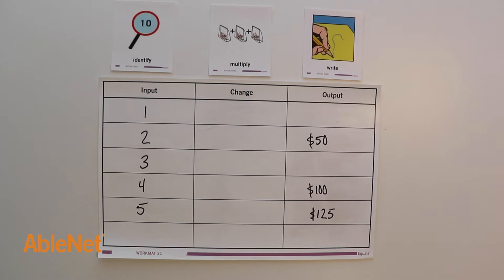The problem states: the pizza parlor manager needs to buy cases of tomato sauce for the pizzas. The cost of one case is $25. Identify missing amounts on the table. What is the cost of three cases of sauce?